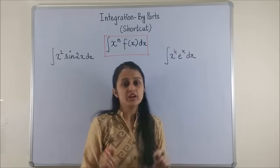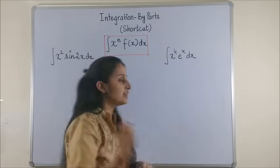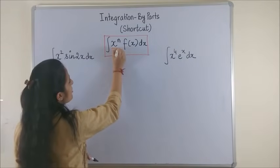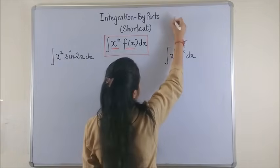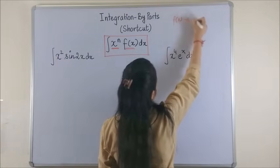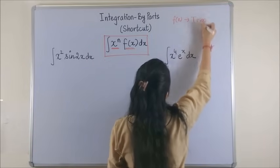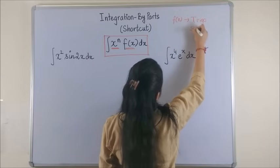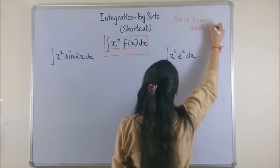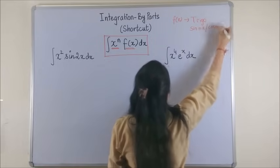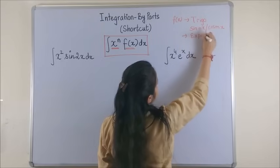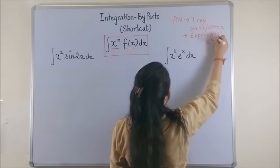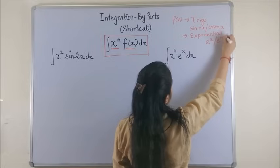Now in today's video, we are going to discuss the shortcut method for when you have a polynomial function into another function. Now this f(x) could be a trigonometric function, sine of nx or cos of mx, or it could be an exponential function, that is e to the power x, e to the power mx, anything.